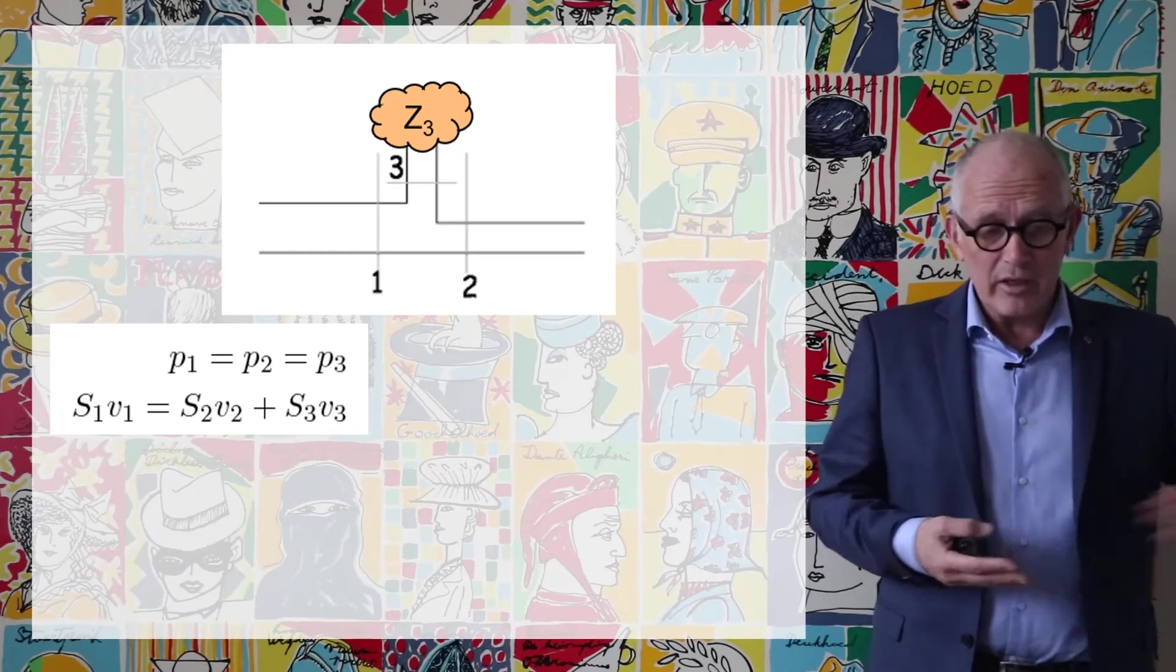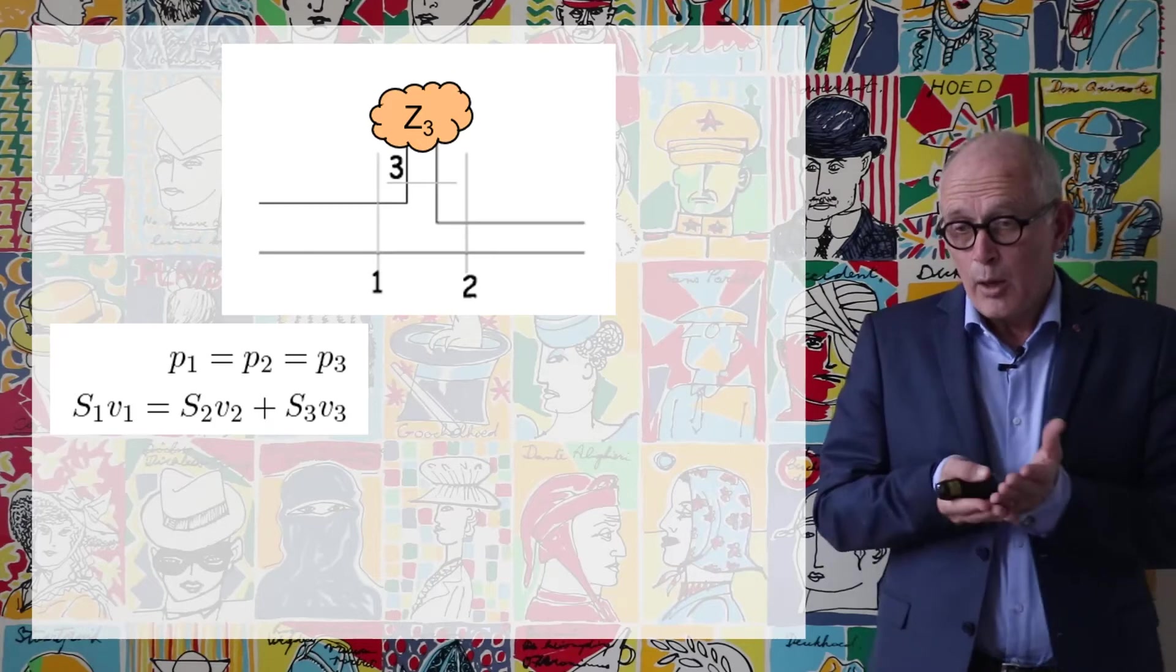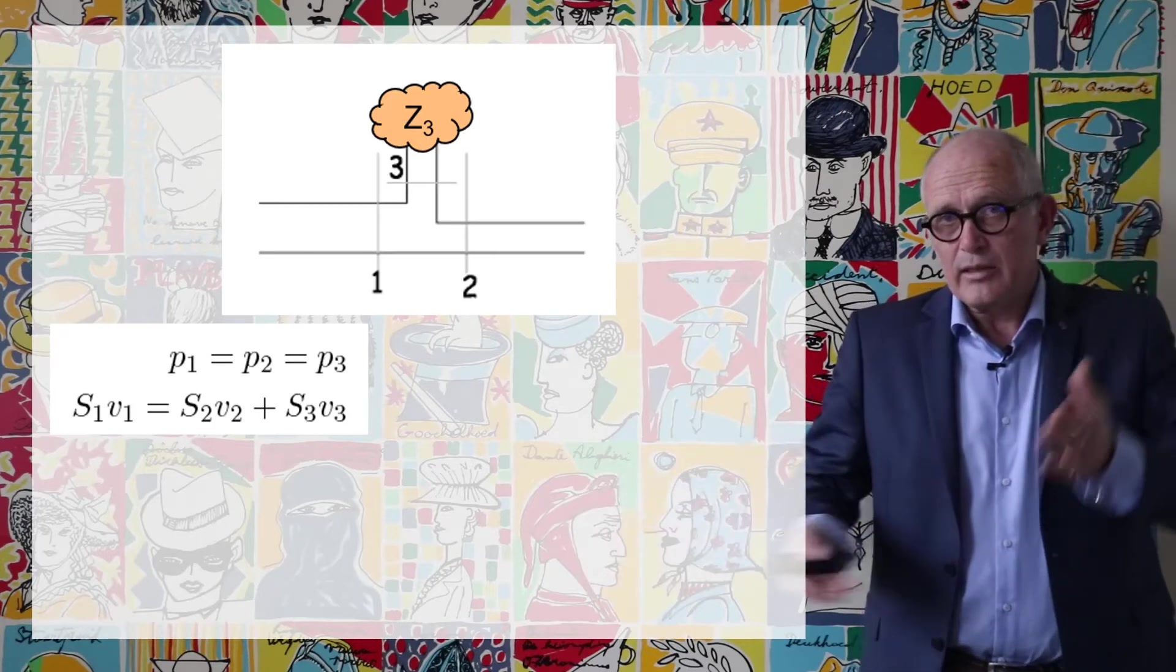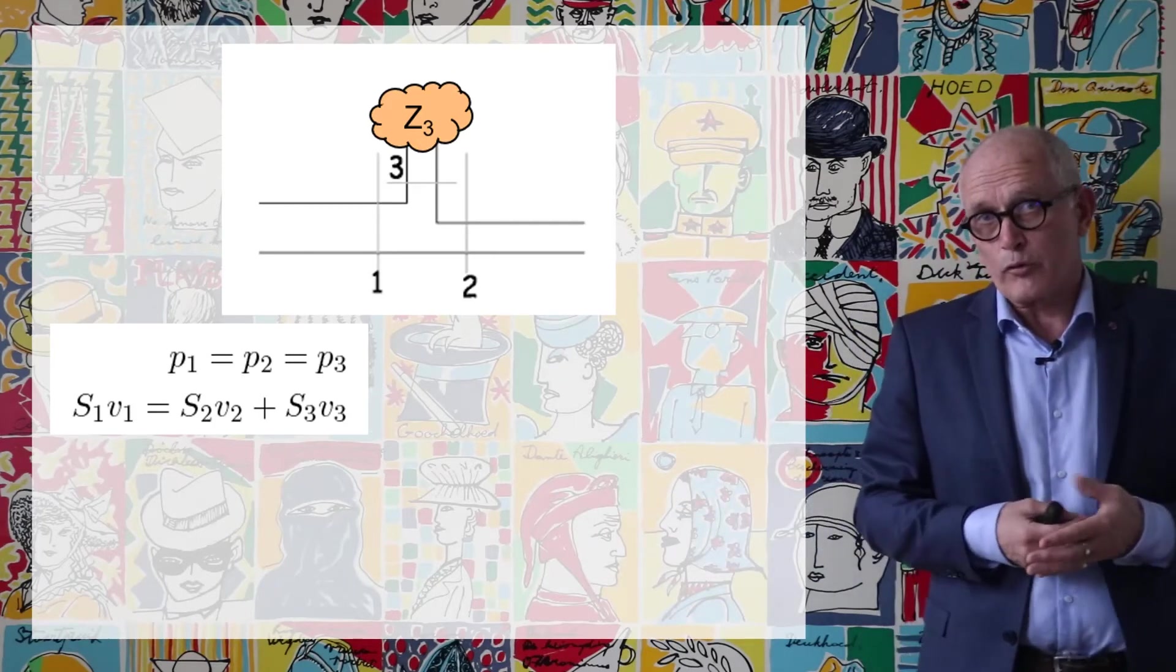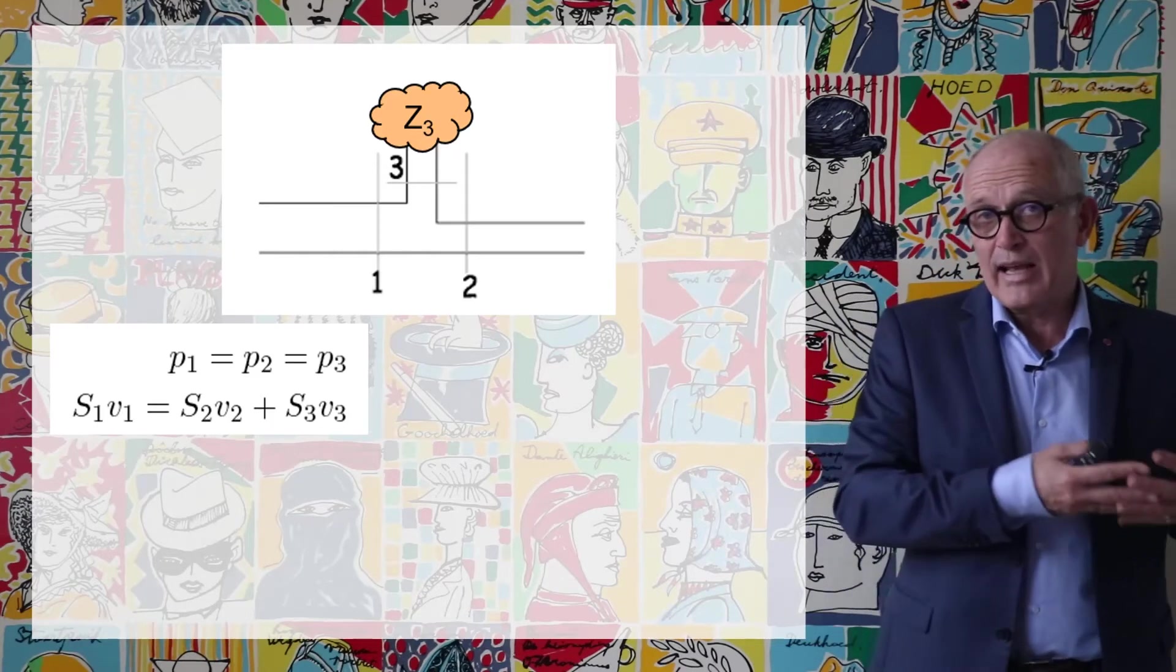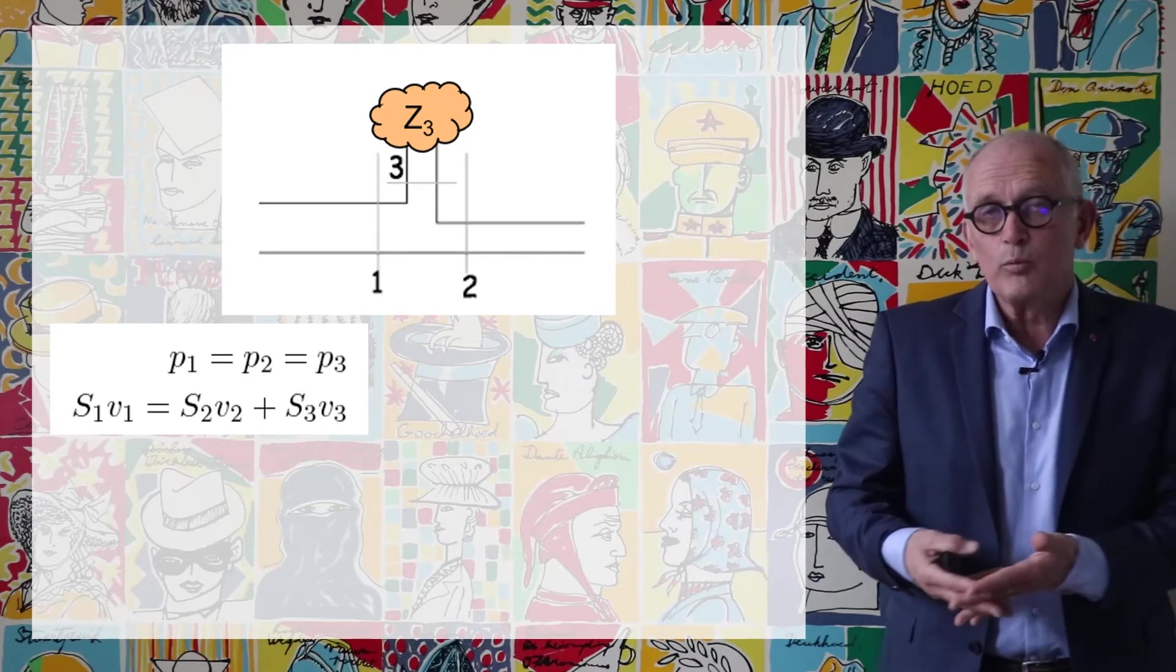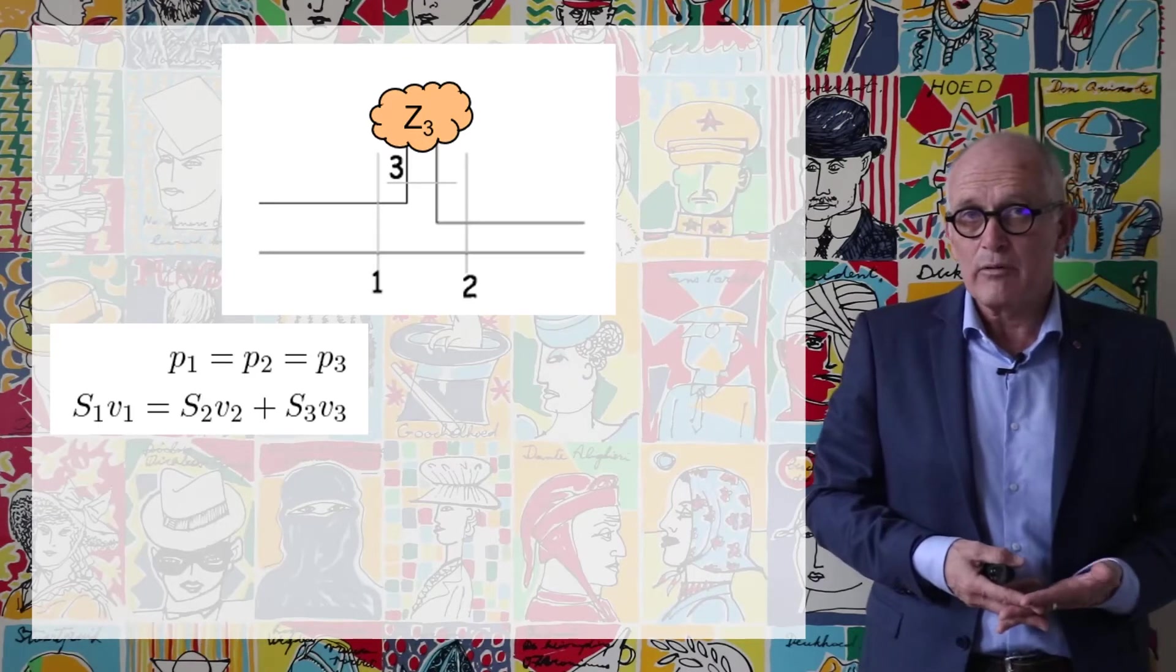And in terms of velocity the acoustic flux coming in through cross-section 1 must be divided between what goes through cross-section 2 and what goes through cross-section 3 so that I have that S1 times V1 is equal to S2 times V2 plus S3 times V3.